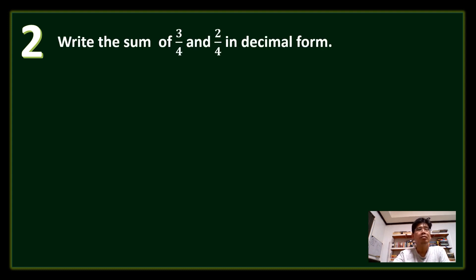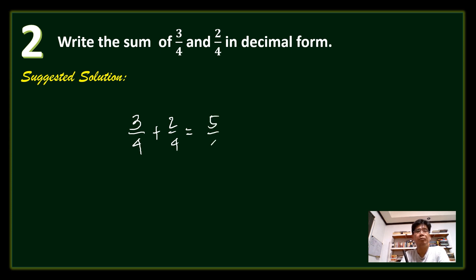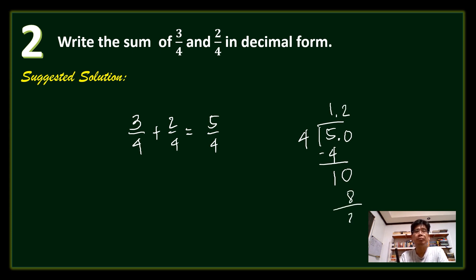Question number 2: Write the sum of 3-fourths and 2-fourths in decimal form. Since both fractions have the same denominator, add them to get 5 over 4. To convert to decimal, divide 5 by 4: 5 ÷ 4 gives 1 remainder 1. Bring down a 0 to get 10 ÷ 4 = 2, remainder 2. Bring down another 0: 20 ÷ 4 = 5 exactly. The answer is 1.25 or 1 and 25 hundredths.